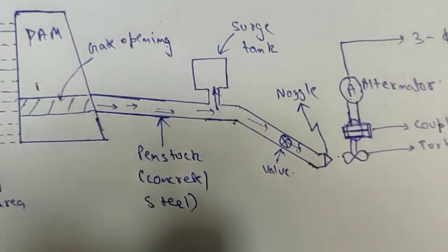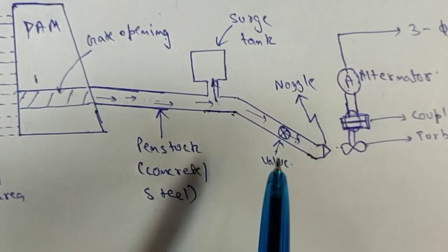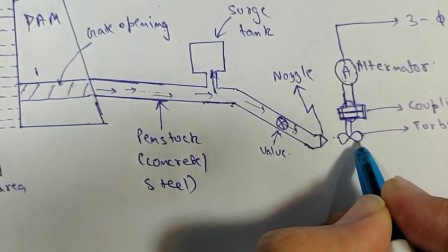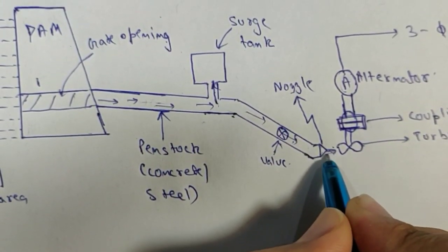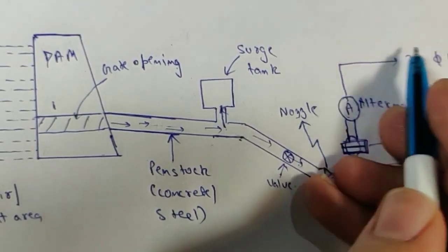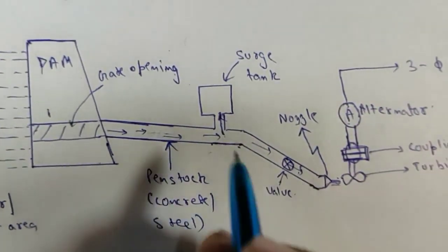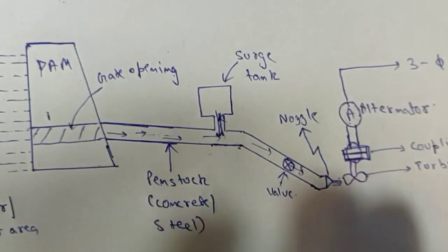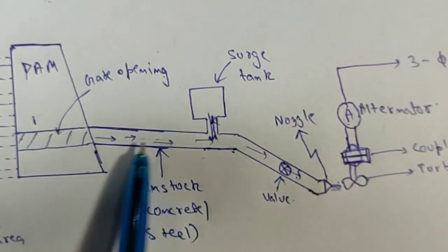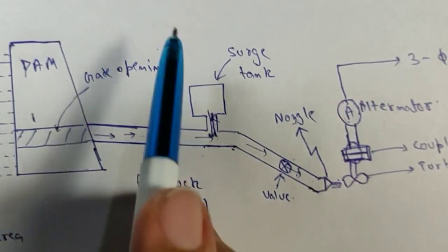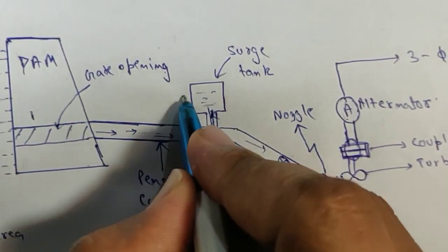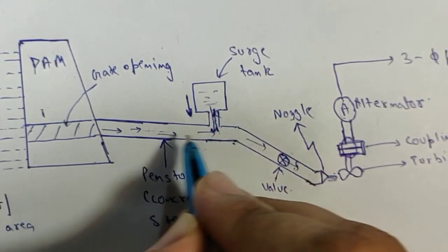Similarly, if I suddenly open the valve, the pressure in the penstock suddenly decreases, which can damage the turbine — the water velocity flowing in decreases and the turbine rotates at a slow speed. So some water flows out from the surge tank to compensate. The basic purpose of the surge tank is to maintain the pressure flow in the penstock: if pressure suddenly increases, the surge tank takes in water; if pressure suddenly decreases, the surge tank gives water to the penstock.